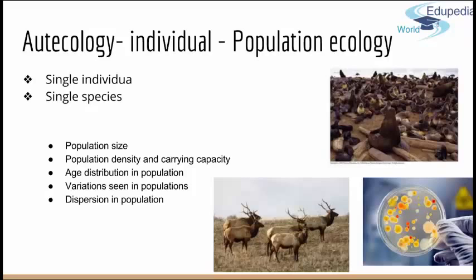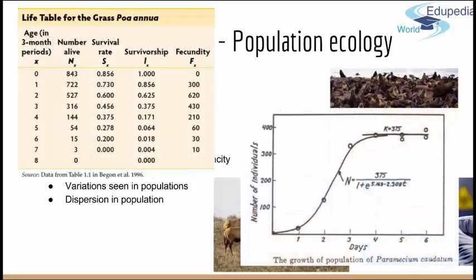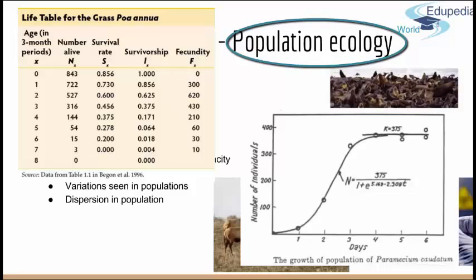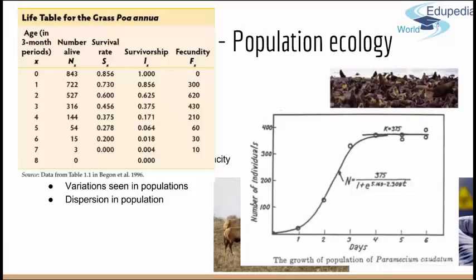Population ecology — autoecology — is tightly connected to mathematical and statistical calculations. For example, this includes growth calculations such as the Paramecium growth curve, or factorial life tables. This lecture is just an introduction to this part of ecology: population ecology, including all the calculations and statistical approaches used to research population dynamics and fluctuation.